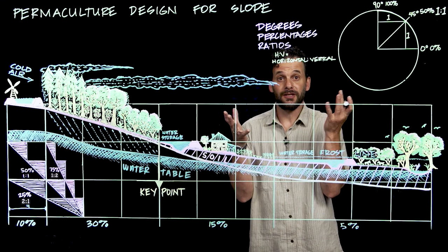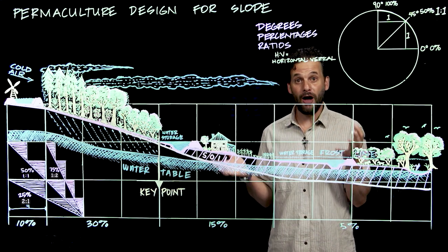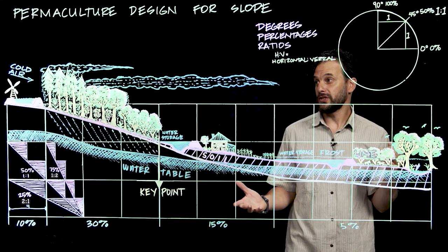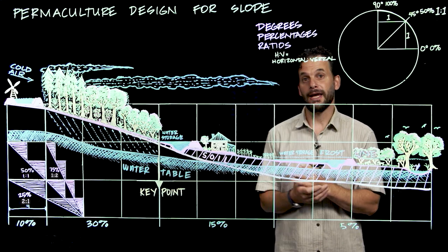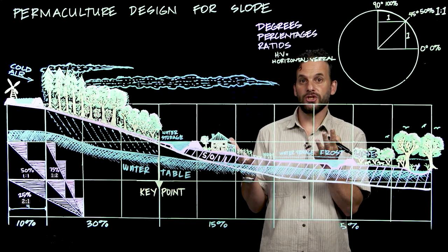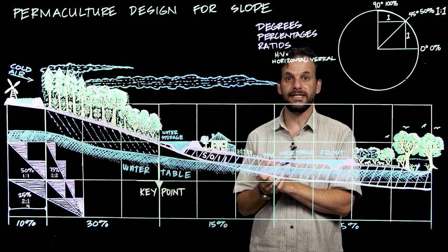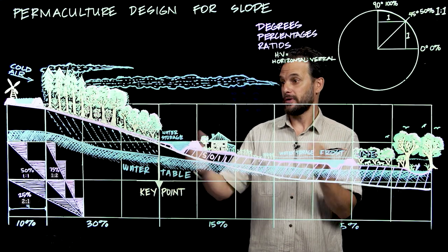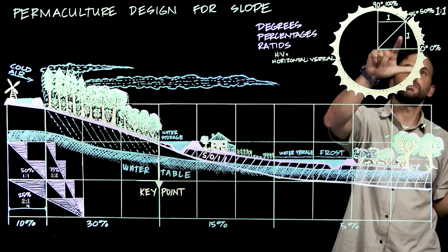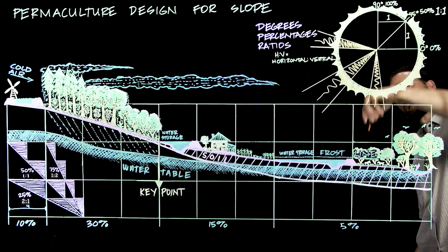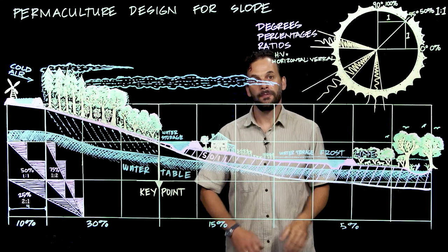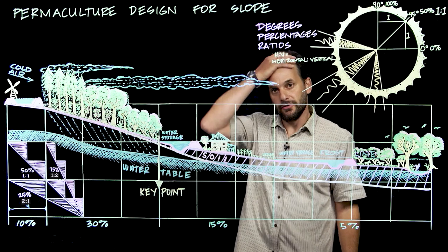Now another important aspect of this perspective on slope that I'm offering is the solar aspect. In most situations, in a humid or temperate environment that has a cold season and dramatic changes in the angle of the sun throughout the seasons, being on the sun-facing slope is optimum.